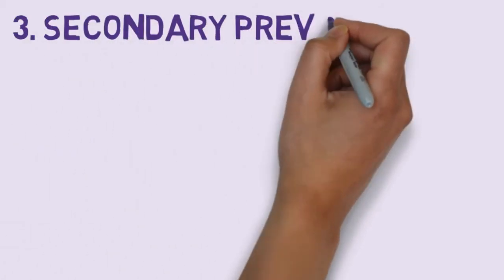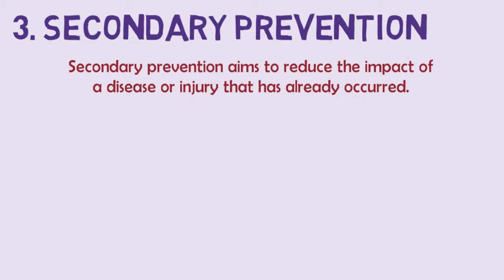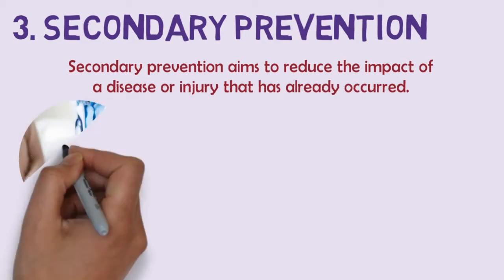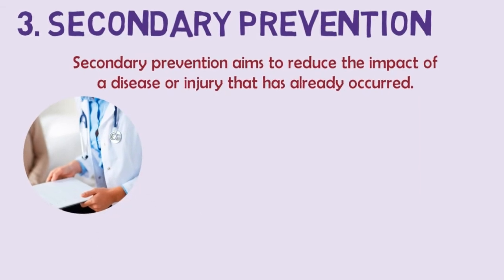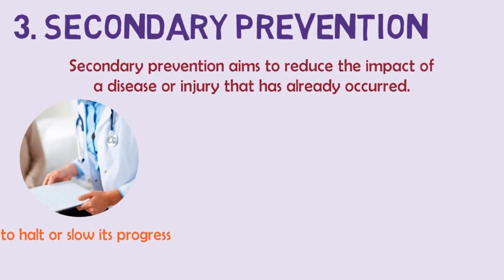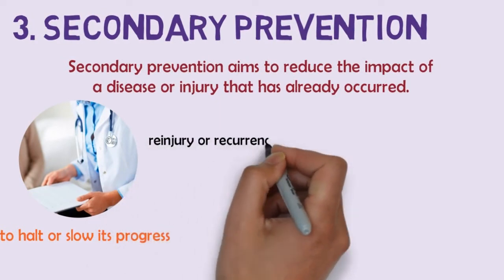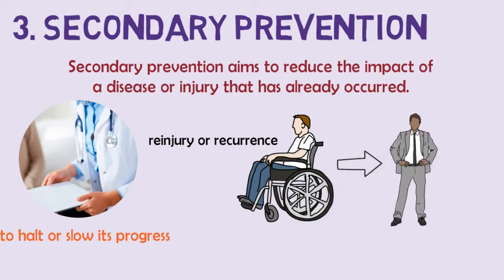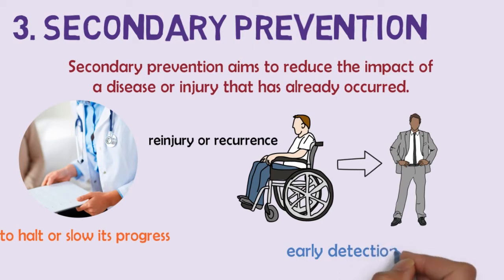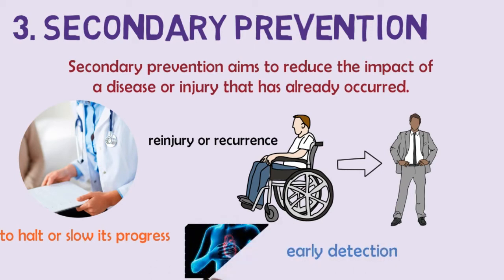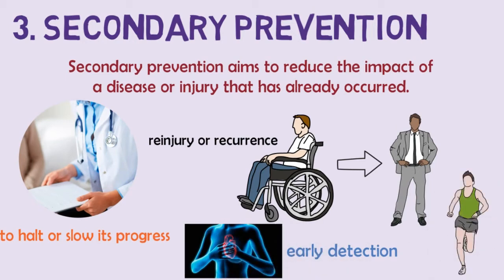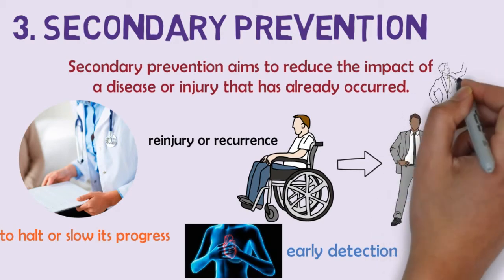Thirdly, we have secondary prevention. Secondary prevention aims to reduce the impact of a disease or injury that has already occurred. This is done by detecting and treating disease or injury as soon as possible to halt or slow its progression, encouraging personal strategies to prevent re-injury or reoccurrence, and implementing programs to return people to their original health and functioning to prevent long-term problems. Examples include regular exams and screening tests to detect disease in its earliest stages, such as a mammogram to detect breast cancer, low-dose aspirin or diet and exercise programs to prevent further heart attacks or strokes, and suitably modified workplaces so injured or ill workers can return safely to their jobs.